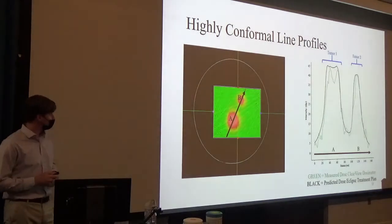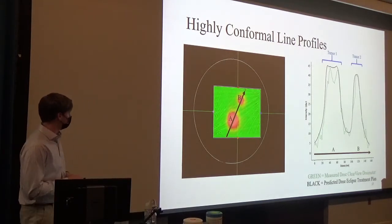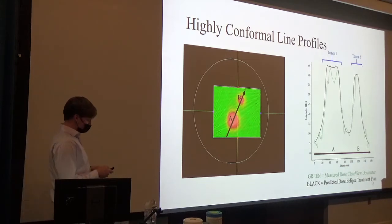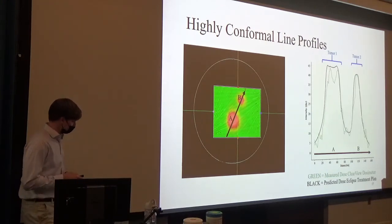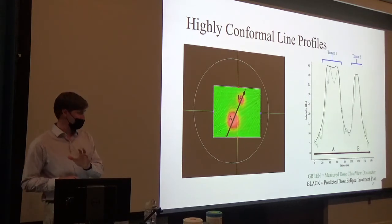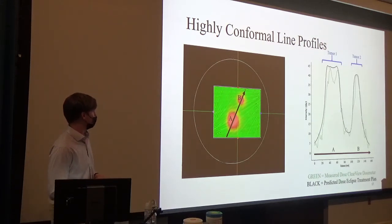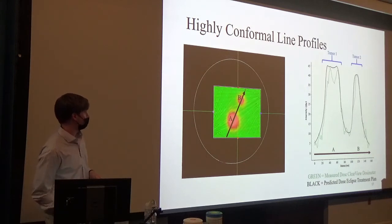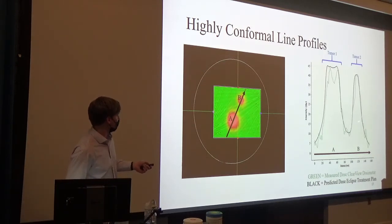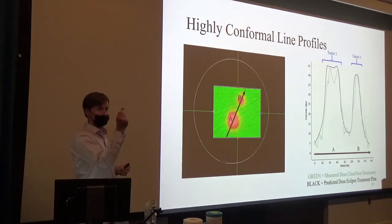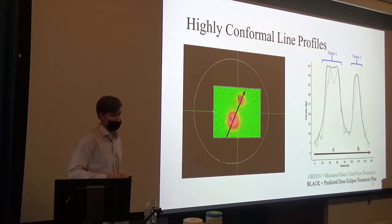In addition to gamma analysis, we can also extract line profiles. The image is interpreted by following the black arrow moving across, which corresponds to the line graph moving left to right. Our first tumor target is represented here, and the second with B on the right side. In the line graph, green shows the measured dose from the Clearview dosimeter we scanned, compared to the predicted dose from the Eclipse treatment planning system. It's very conformable across both tumors. What I think is even more impressive is the distance between the two tumors — we can drop from 45 Gray all the way down to 10, and the physical distance between those two tumors is the size of a quarter, which is quite impressive.